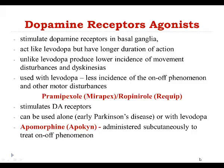Dopamine receptor agonists act like levodopa but have a longer duration of action. Unlike levodopa, dopamine receptor agonists do not produce symptoms of movement disturbances and dyskinesias. They can be used alone, typically in early treatment of Parkinson's disease, or in combination with levodopa.